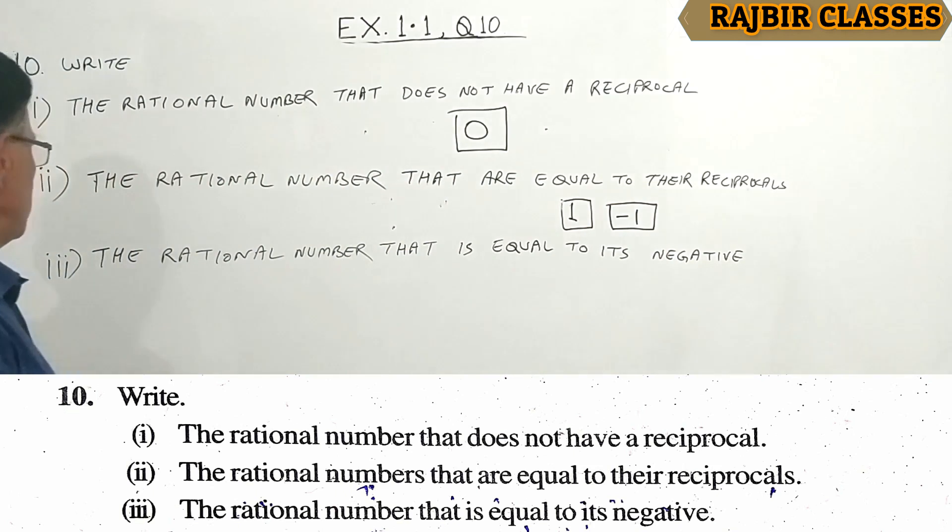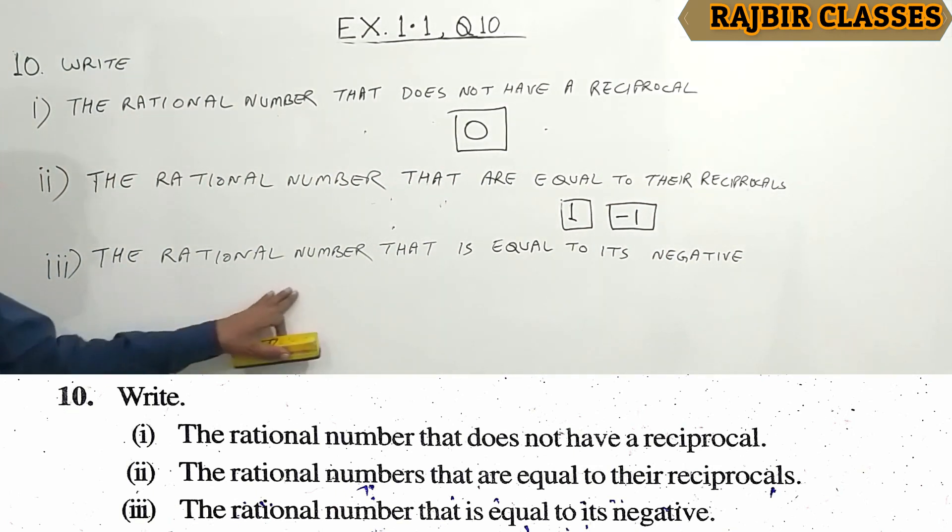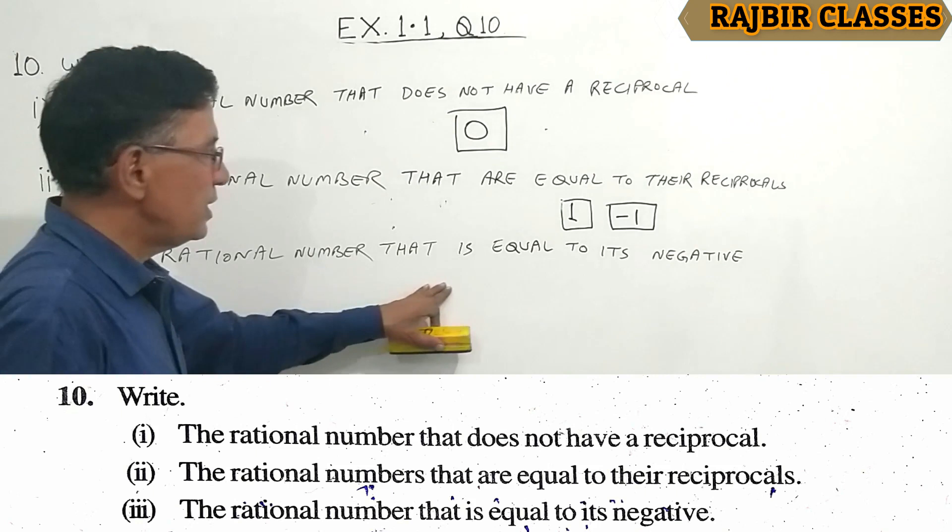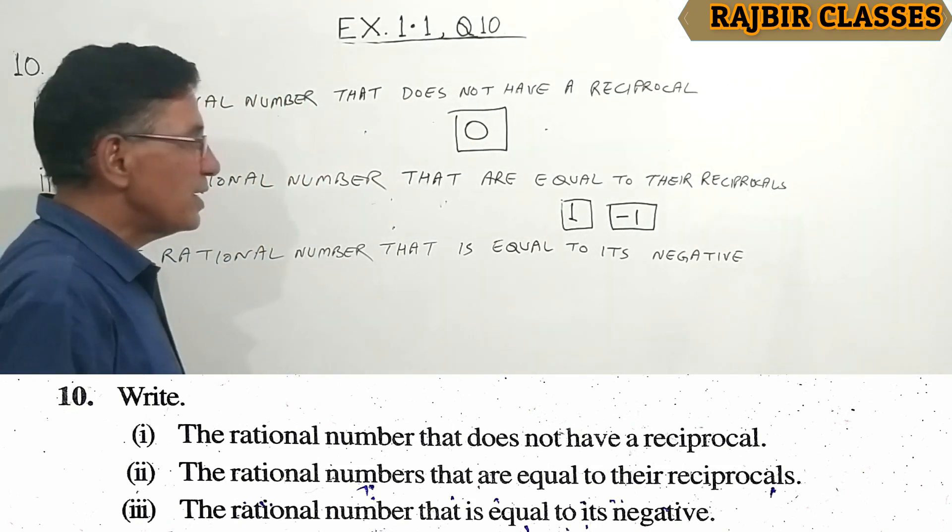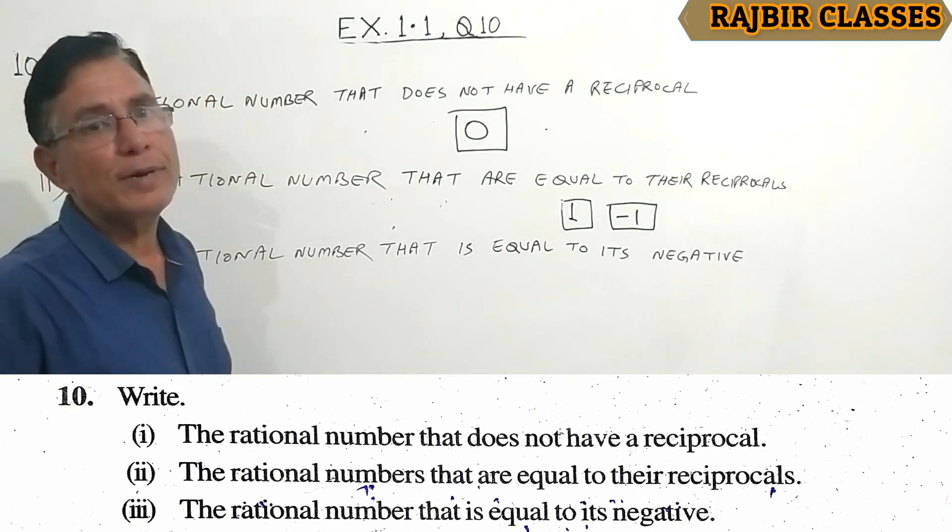Next, third question: the rational number that is equal to its negative. What is the negative of a rational number?